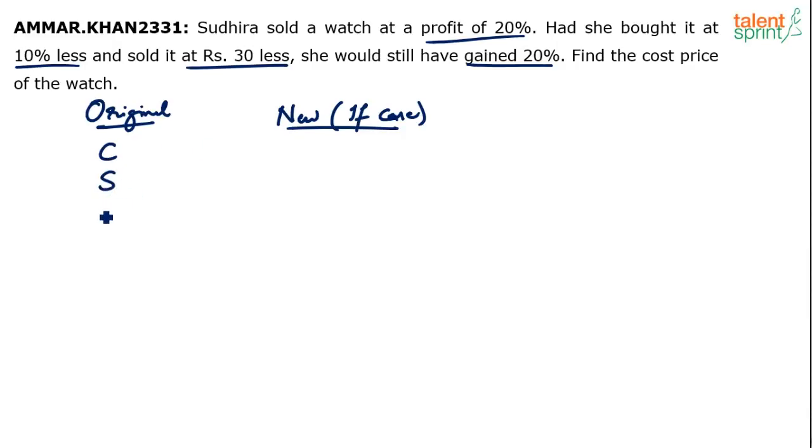How much is the profit? 20%. If the profit is 20%, can you not say selling price is equal to 1.2 times the cost price? Because when the profit is 20%, selling price will be 120% of cost price. So S equals 1.2C. This is the original case.